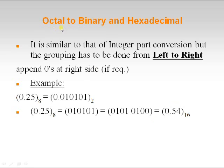Now let us see how to convert a given octal fractional to binary and hexadecimal. It is again similar to integer part conversion but grouping is done from left to right; append zeros at the right side if required. For example, given an octal fractional, represent every digit using 3 bits: 010 and 101. To convert the same octal to hexadecimal, represent every digit in 3 bits and then group 4 bits to get the resultant hexadecimal.